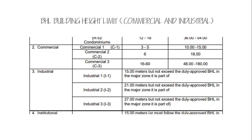Be careful not to confuse the division and group classifications. When we talk about commercial C1, C2, and C3, these are different from Group E and Divisions E1, E2, and E3. The National Building Code has different groupings. For building height limits: C1 corresponds to Group E1, E2, and E3.